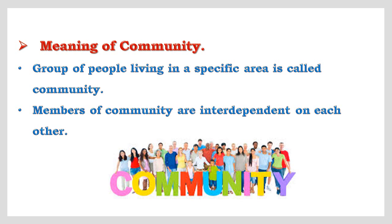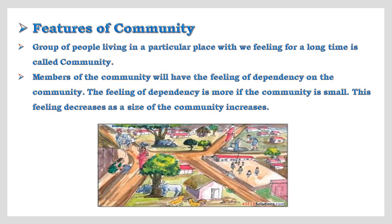We will understand the meaning of community. A group of people living in a specific area is called a community. The people who reside in that area are called community members. Members of a community are interdependent — that means all the people around us in a community are dependent on each other.